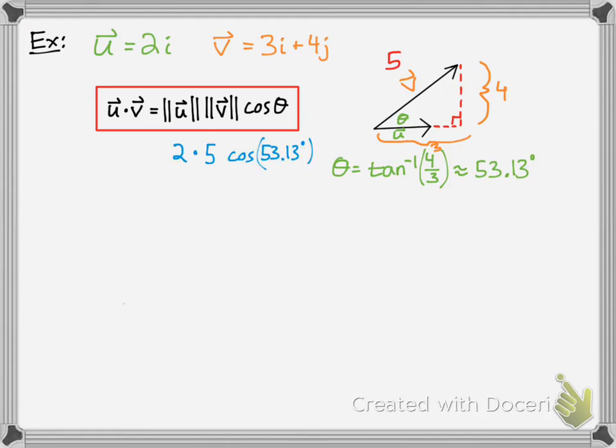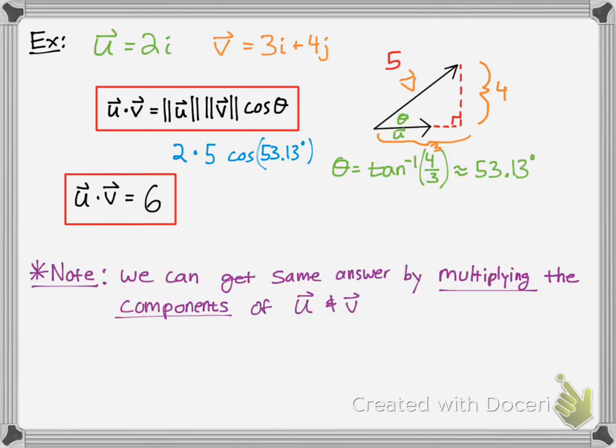You take your magnitude of u, which is 2, since it's going in the same direction, no degree angle change there, times the magnitude of the vector, which was 5, the hypotenuse. The magnitude is how fast, kind of think of it as speed. Then you multiply those two together and times cosine of theta, and you get 6.